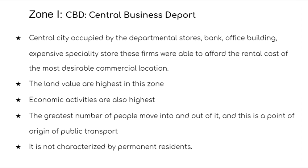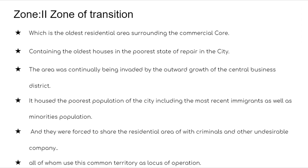Zone 1 is not characterized by permanent residence. Zone 2 is the zone of transition — the oldest residential area surrounding the commercial core, containing the oldest houses in the poorest state of repair. The area is continually being invaded by the outward growth of the central business district. It houses the poorest population including the most recent immigrants, who are forced to share their residences with criminals and undesirable elements who use this territory as a locus of operation.